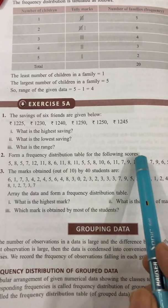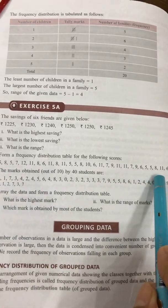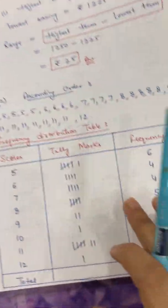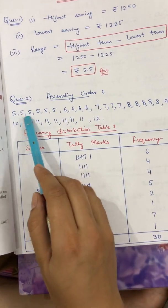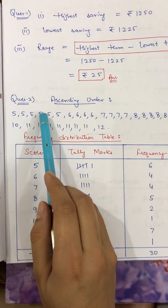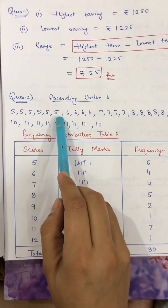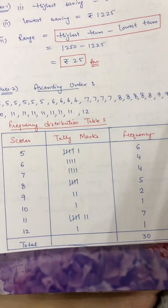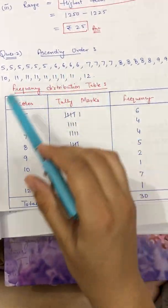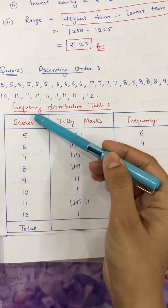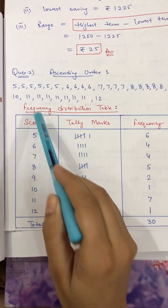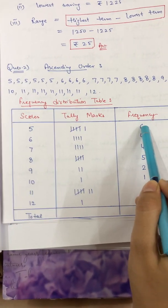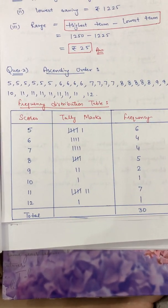The next question asks you to form a frequency distribution table for the following scores. First, arrange the data in ascending order — lowest value first, then bigger and bigger up to the biggest. The table has three columns: scores, tally marks, and frequency. For example, 55 is occurring six times, so write frequency 6.